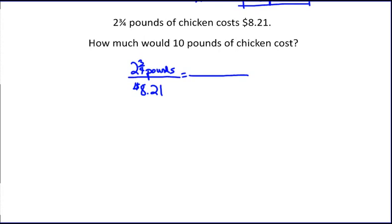Then it says, how much would 10 pounds of chicken cost? The 10 pounds must go on top, and the only place left for the x is on the bottom.